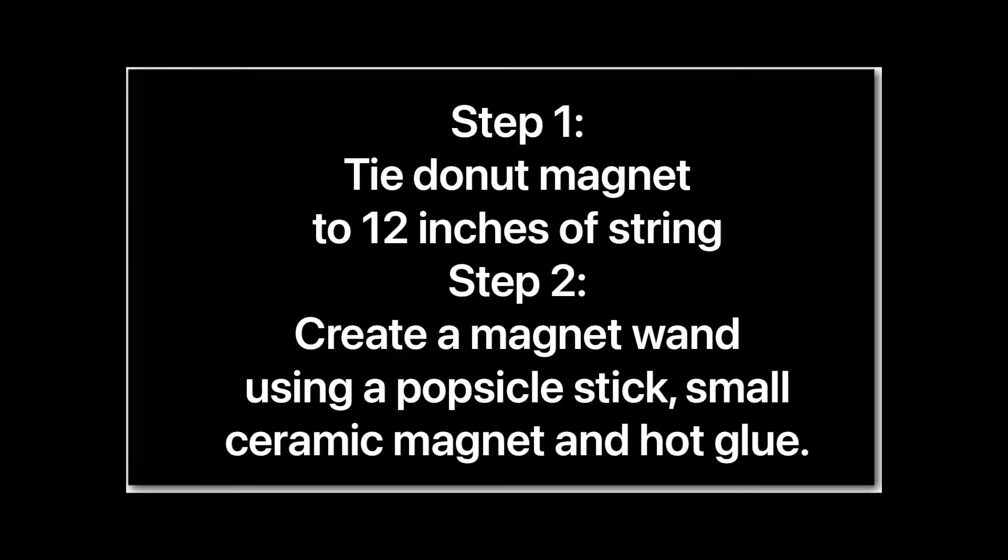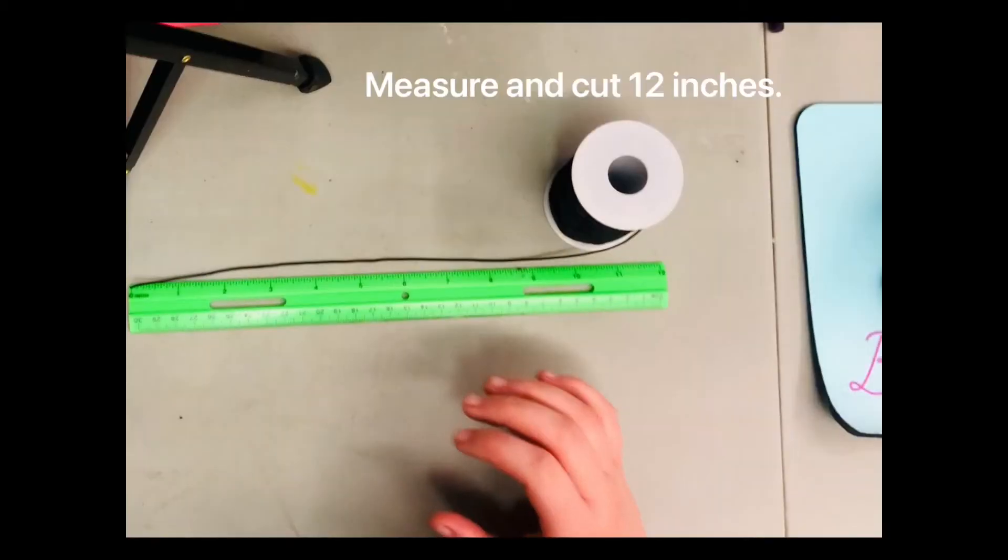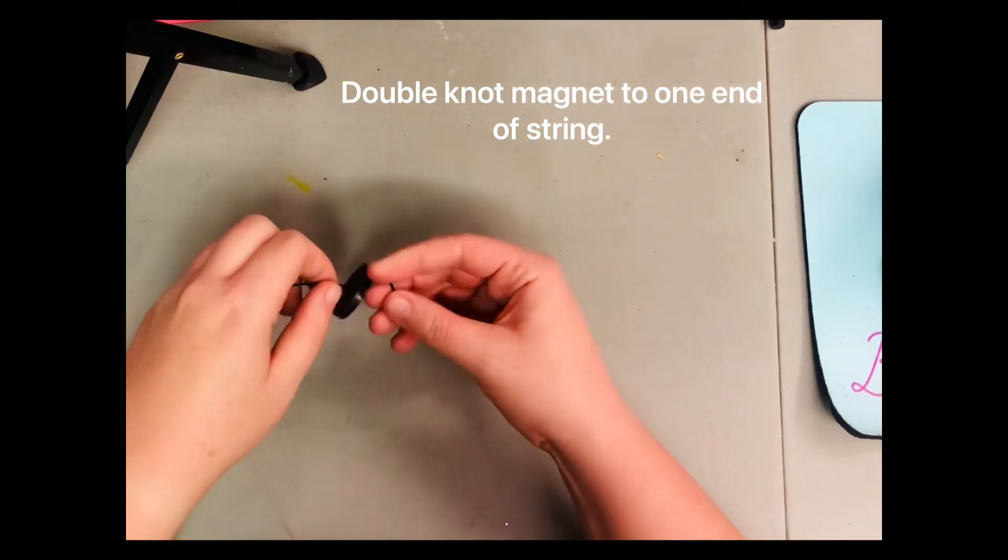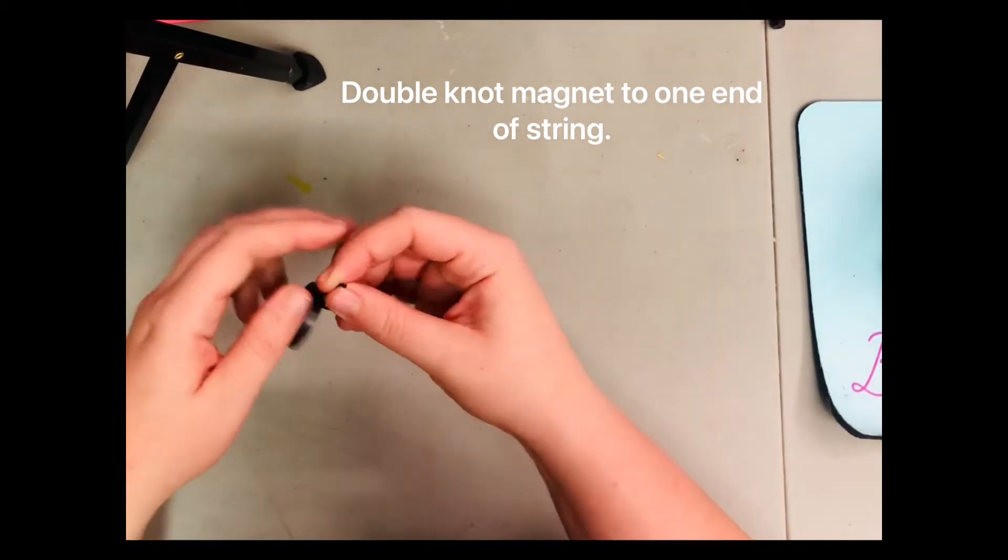First let's do step one and step two. Measure and cut 12 inches of string. Then take your donut magnet and double knot it to one end of the string.